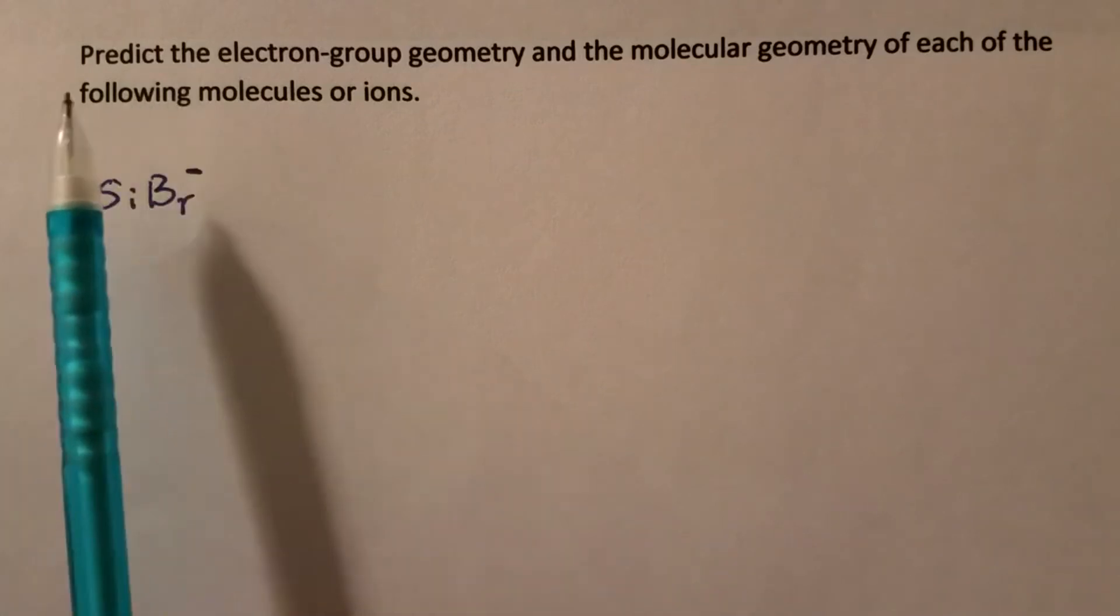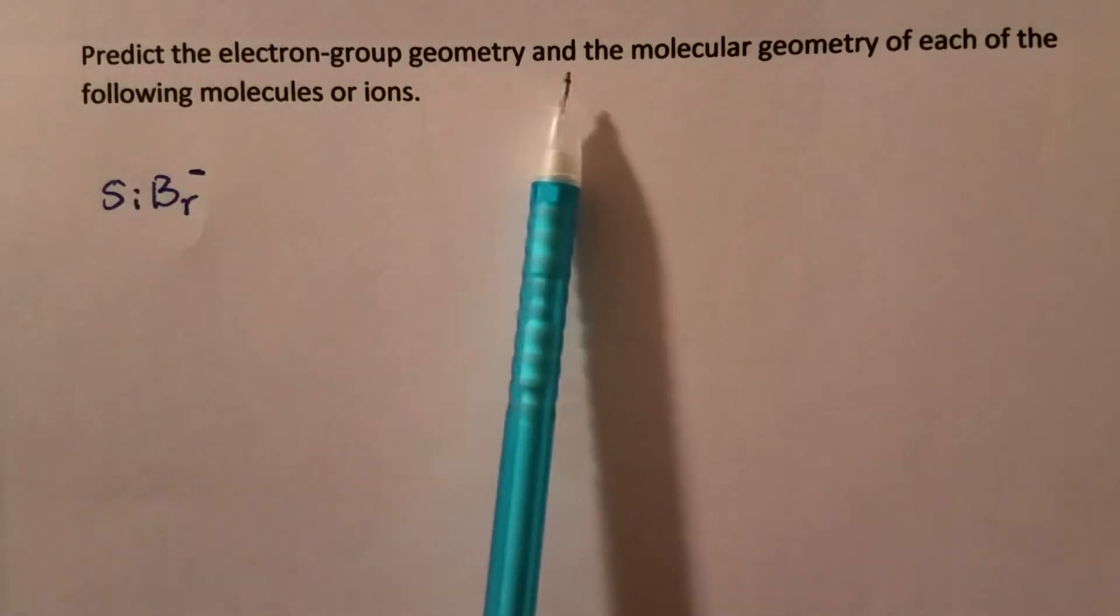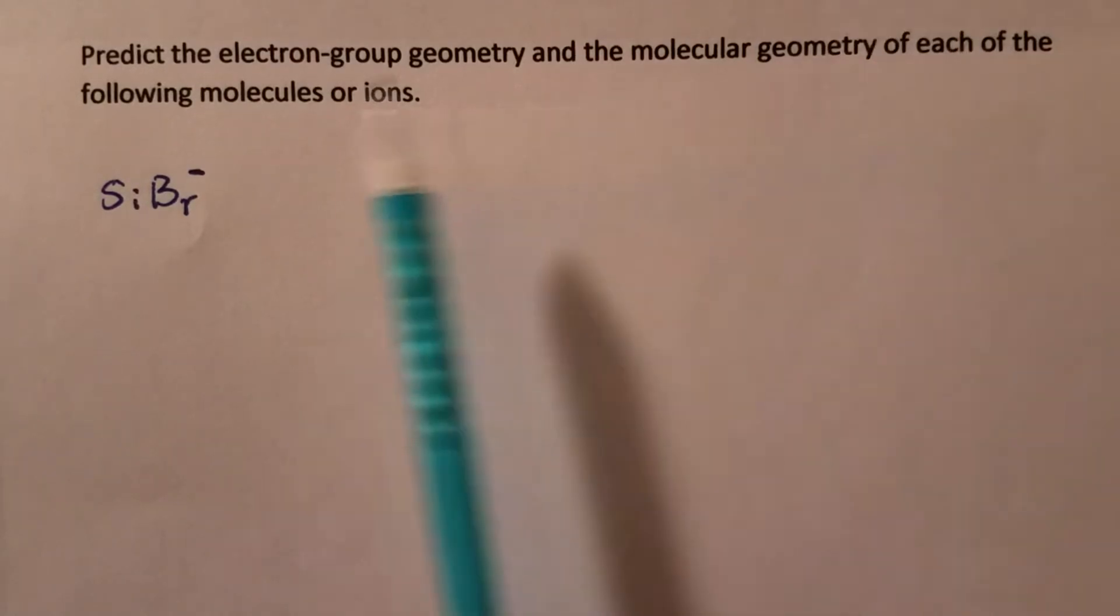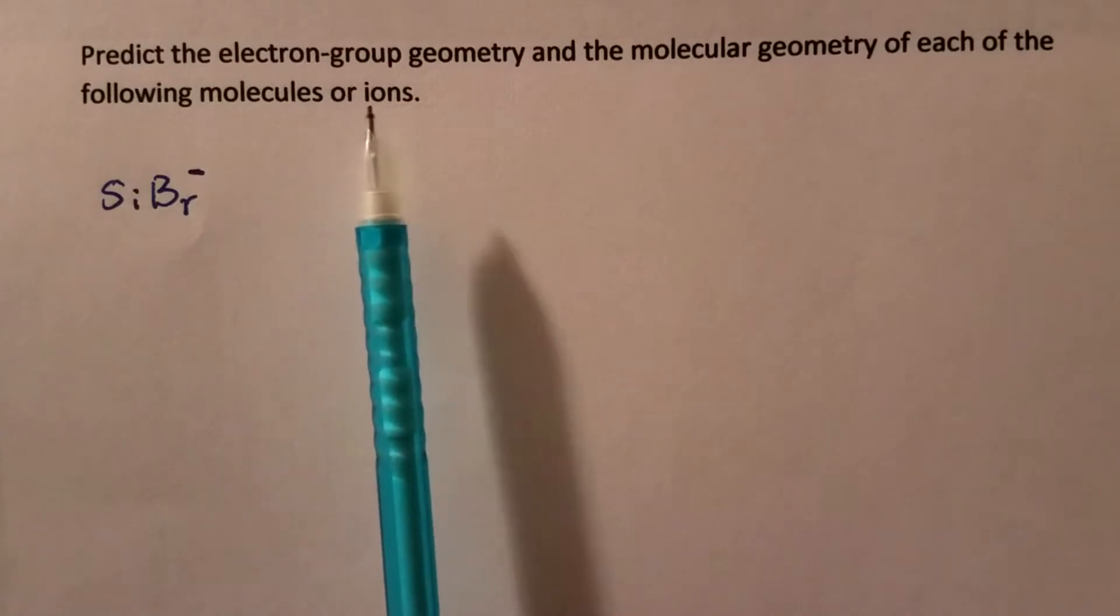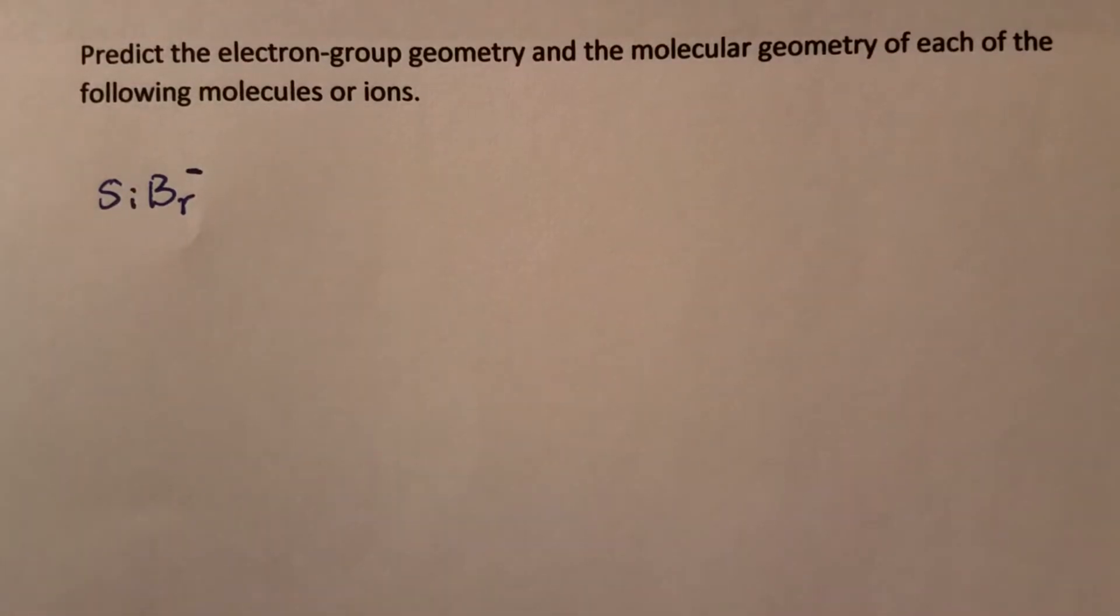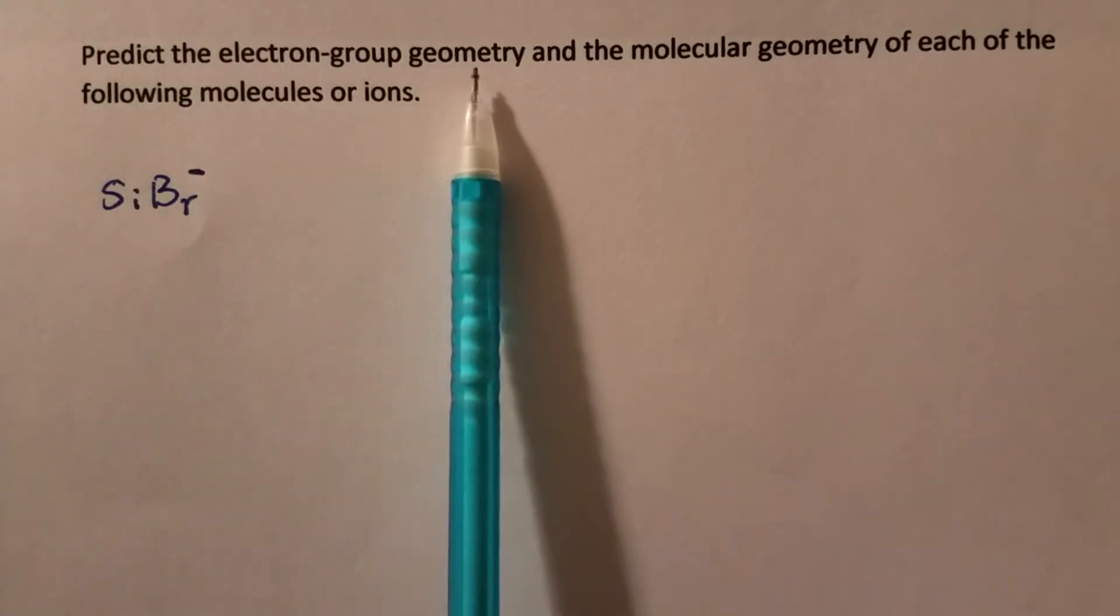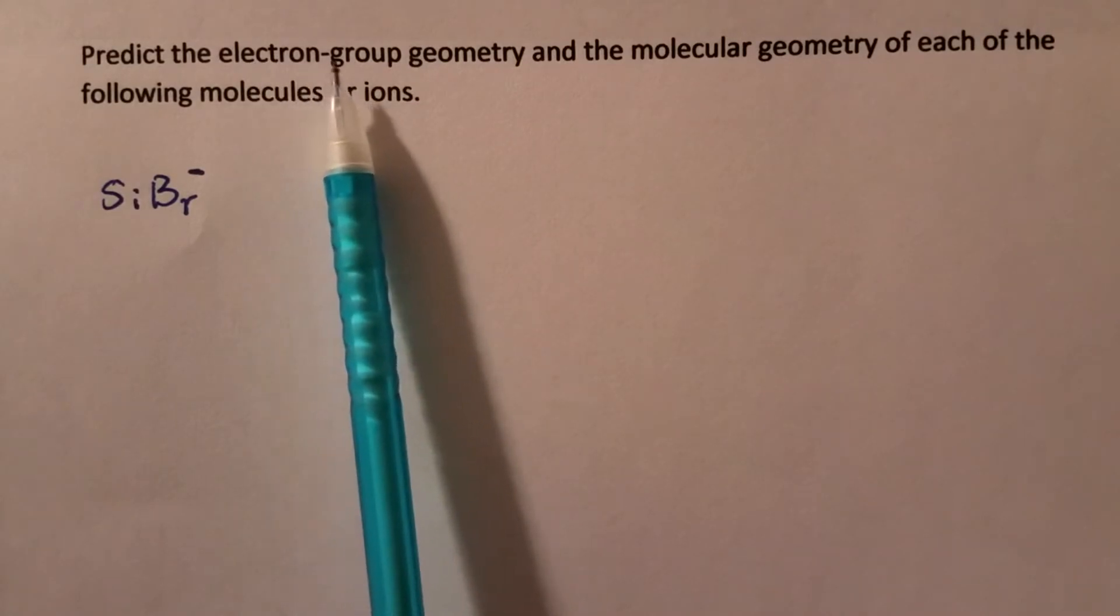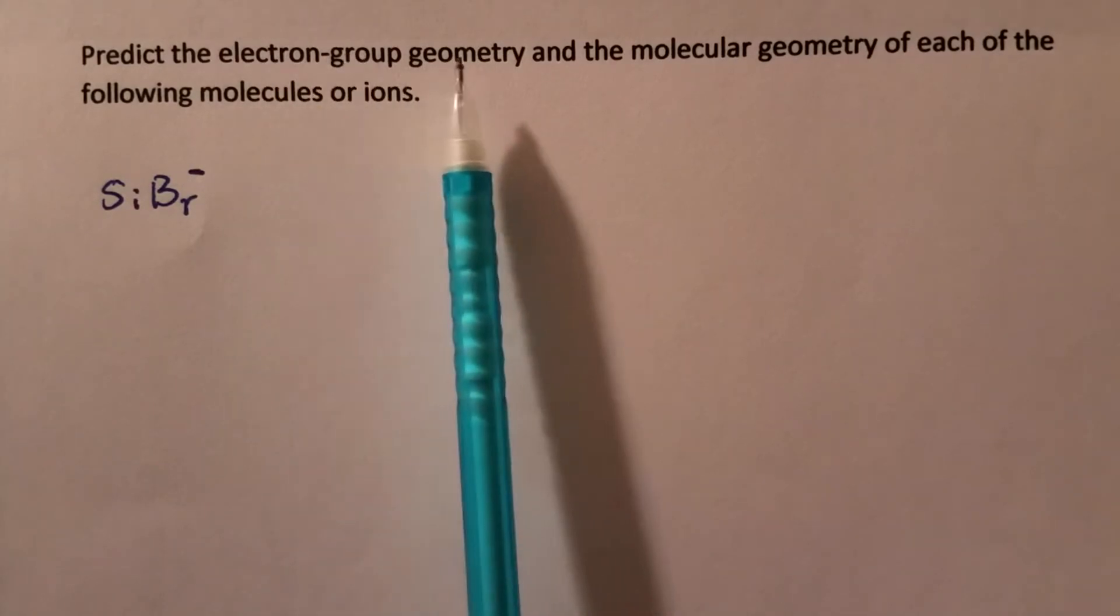This clip is to predict the electron group geometry and the molecular geometry of each molecule or ion. There are different names for electron group geometry. Some textbooks may call them electron pair geometry, electron domain geometry.